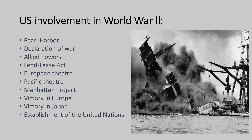The U.S. was involved in the top-secret Manhattan Project, which developed the atomic bomb. The first and only use of atomic weapons occurred when the U.S. dropped atomic bombs on the Japanese cities of Hiroshima and Nagasaki in August 1945. The U.S. along with the Allies achieved victory in Europe on May 8, 1945, after the surrender of Nazi Germany. Japan surrendered on September 2, 1945, after the U.S. dropped atomic bombs, bringing an end to World War II.